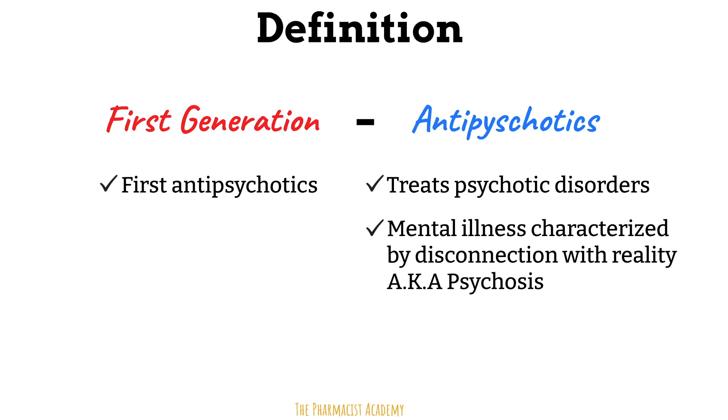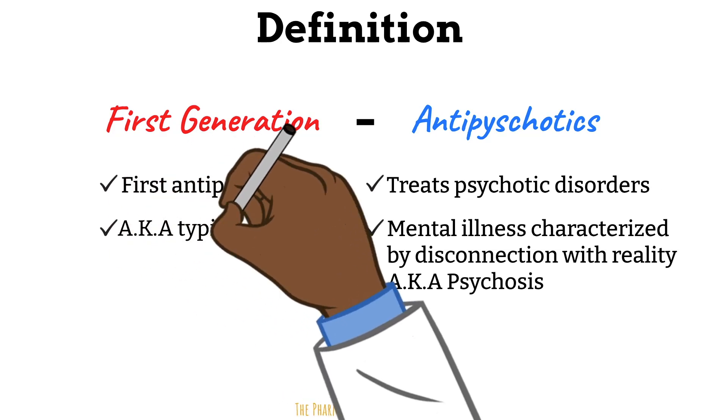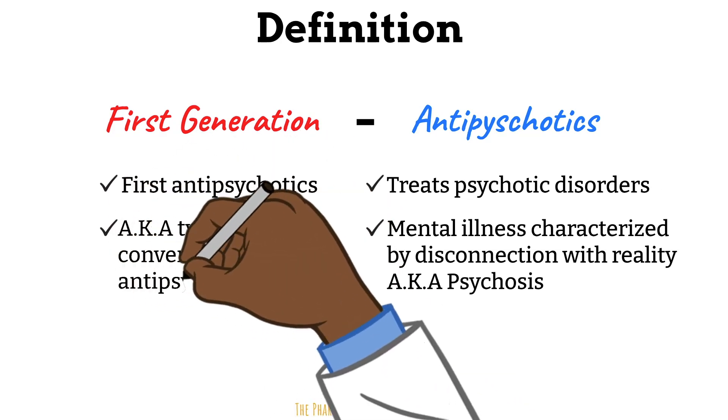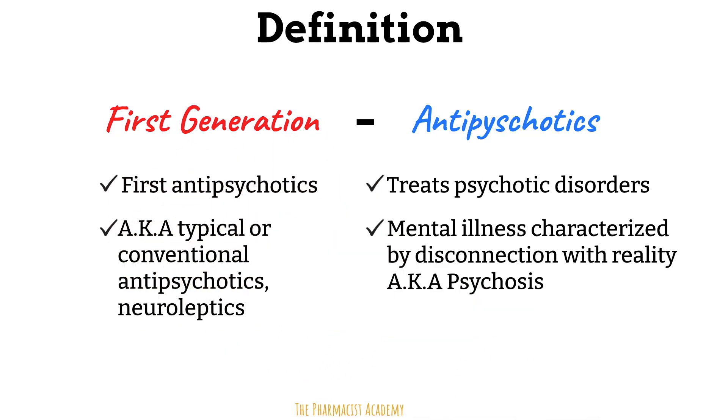The first-generation antipsychotics can also be referred to as typical antipsychotics, conventional antipsychotics, or neuroleptics. Before we learn more about them, we need to understand what psychosis is — what's causing it, what are the changes in the body leading to it. Then we can learn how the first-generation antipsychotics are able to fix this problem.